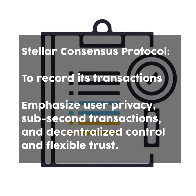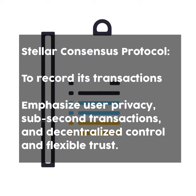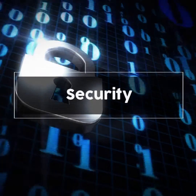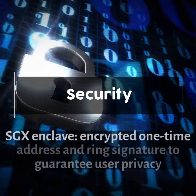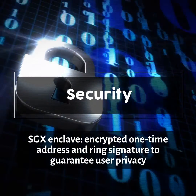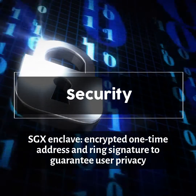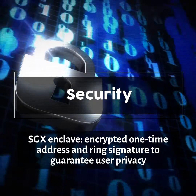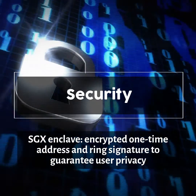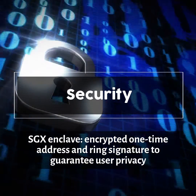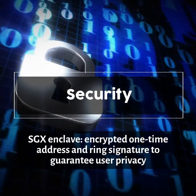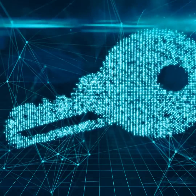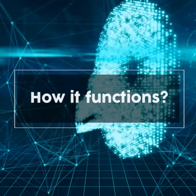MobileCoin emphasizes user privacy, sub-second transactions, decentralized control, and flexible trust security. MobileCoin uses an SGX enclave, encrypted one-time addresses, and ring signatures to guarantee user privacy. The SGX enclave is an isolated part of the processor that runs code like any other processor, but the software inside cannot be accessed or changed by the device's operating system.